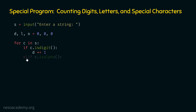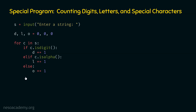After this, we need to check if C is a letter. The isalpha function allows us to check whether the character is a letter or not. If the character is a letter, then we will increment the count of L by one. Otherwise, we will increment the count of O by one — if the current character is neither a digit nor a letter, then it must be a special character. After the execution of this for loop, we will have appropriate counts in variables D, L and O, and we are ready to print them.